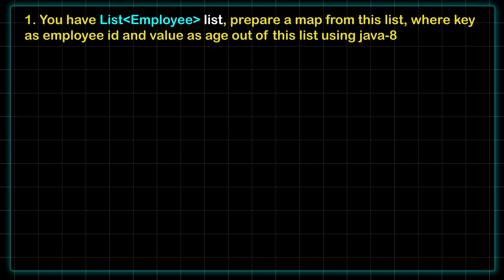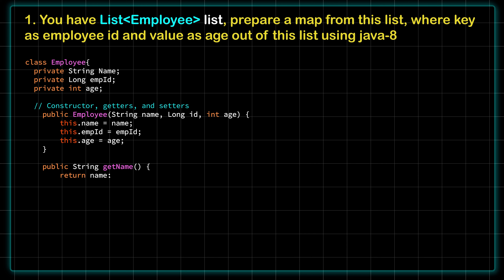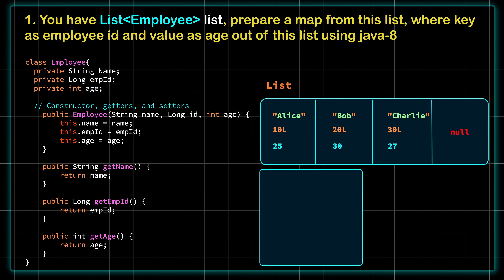The first question is from Java. You have been given a list of employees. You have to prepare a map from the list where the key is the employee ID and the value is age. The condition given is you have to use Java 8, which means you can go for Java Streams and extract a map from the given list. Here you can see an example Employee class which has employee name, employee ID, and age. Taking examples from the list — Alice, Bob, and Charlie — they have names, ages, and employee IDs. Now let's extract and create a map from the list using employee ID and age.